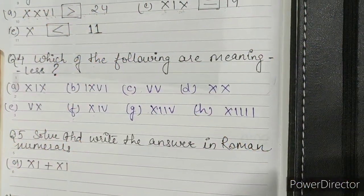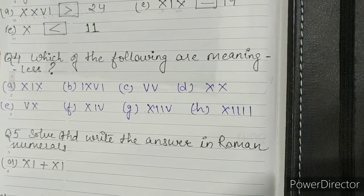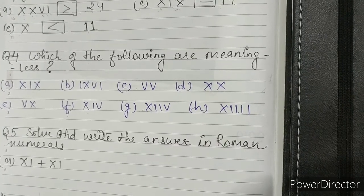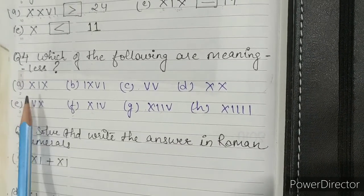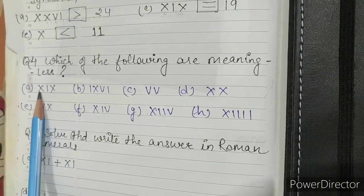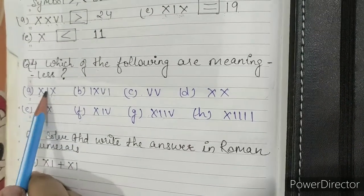Let's start with question 4. Which of the following are meaningless? Part A: XIX is 10 and 9, which is 19.